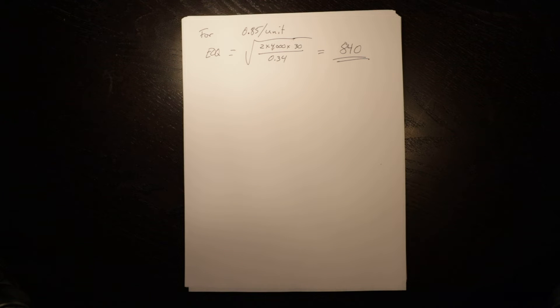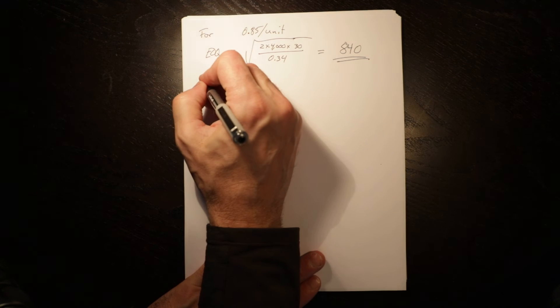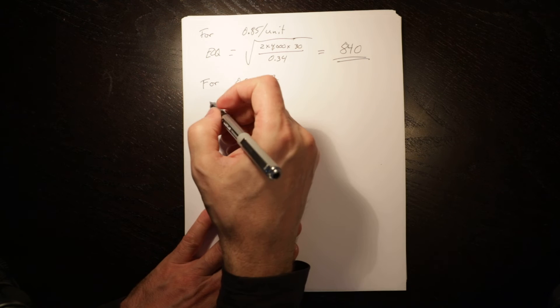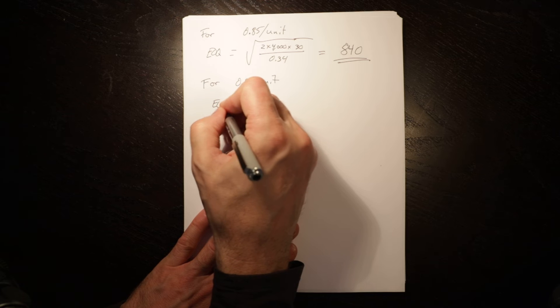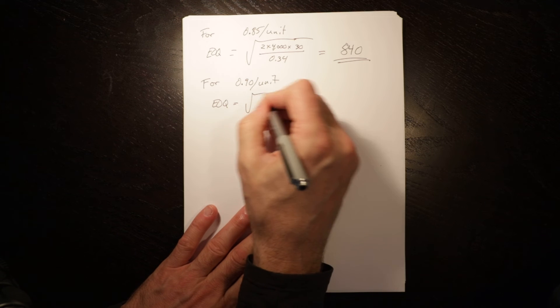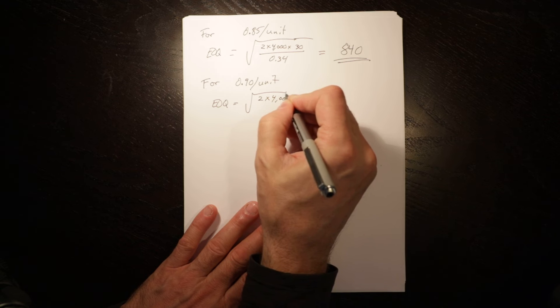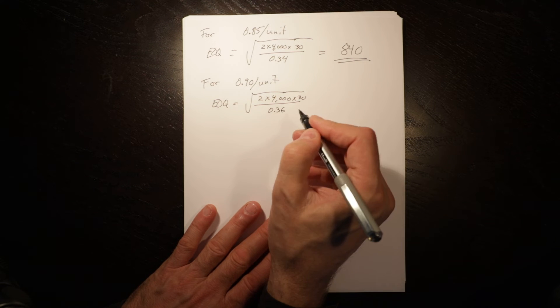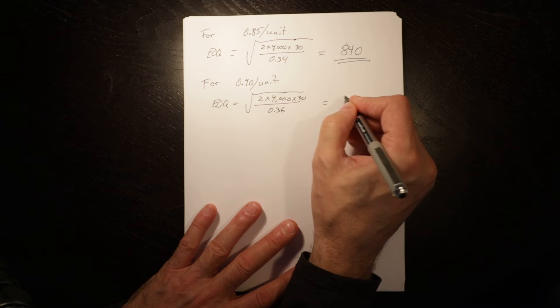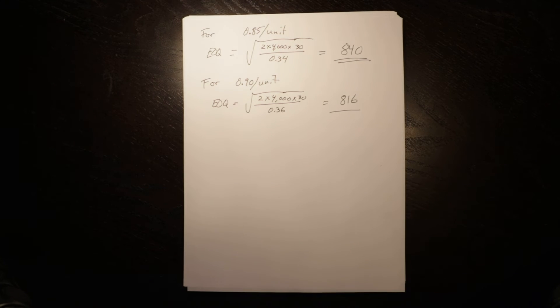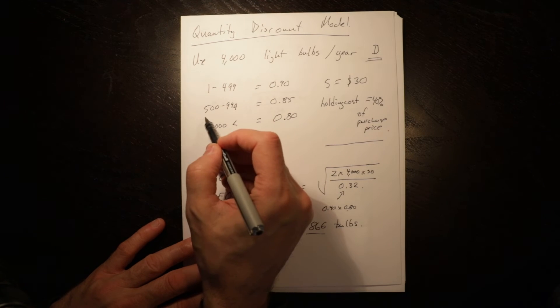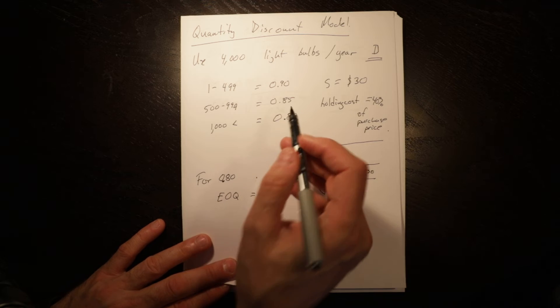For 0.90 per unit, the EOQ equals the square root of 2 times 4,000 times 30 divided by 0.36, which is the holding cost for the higher acquisition costs. This equals 816.